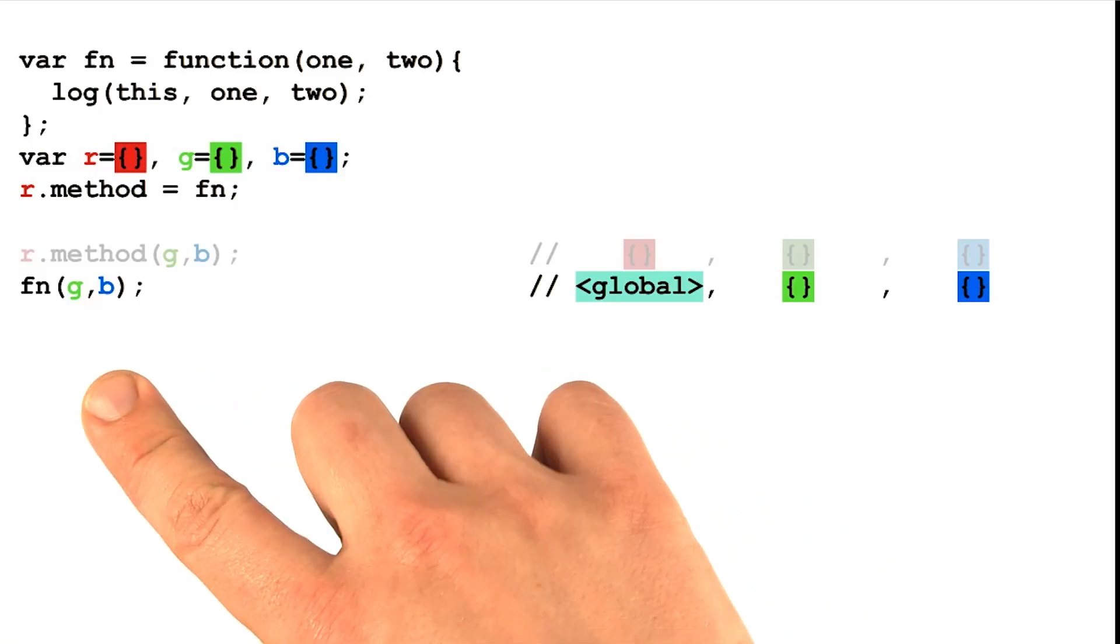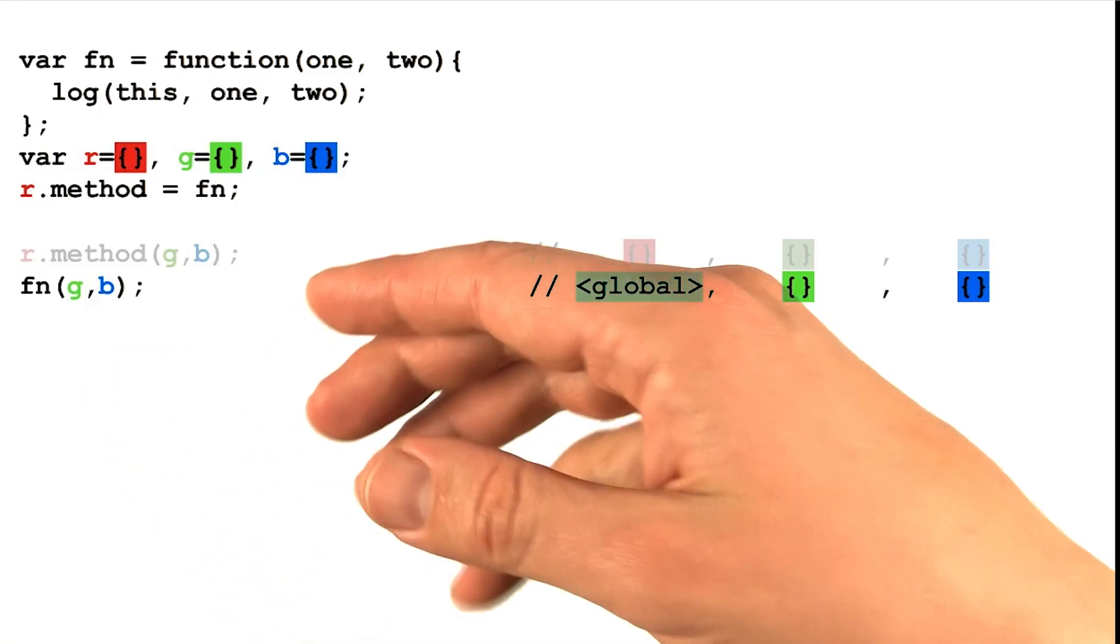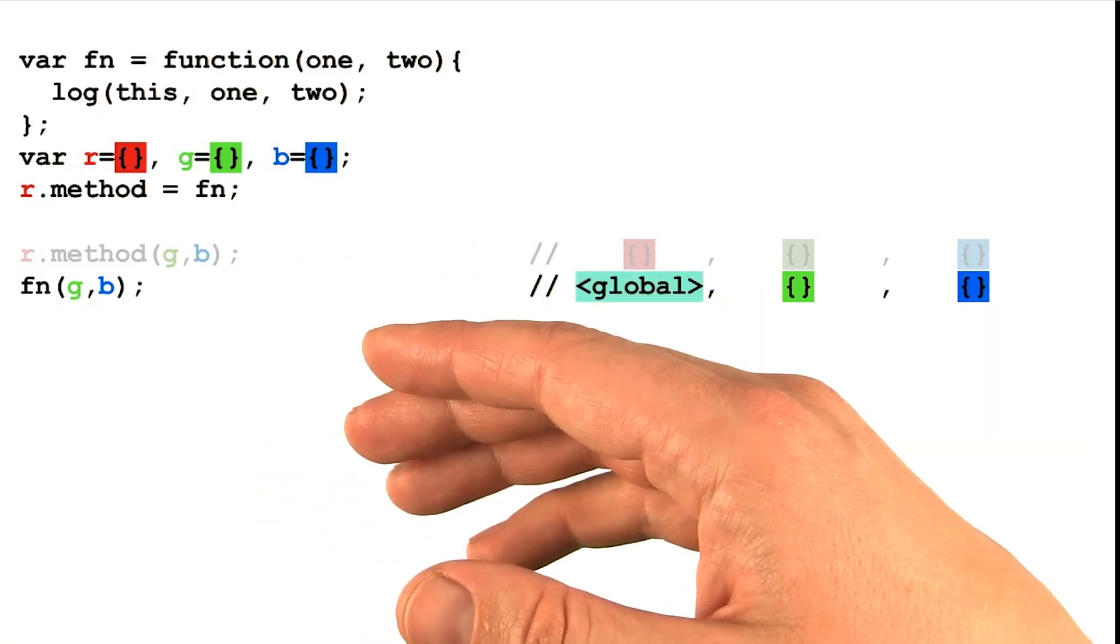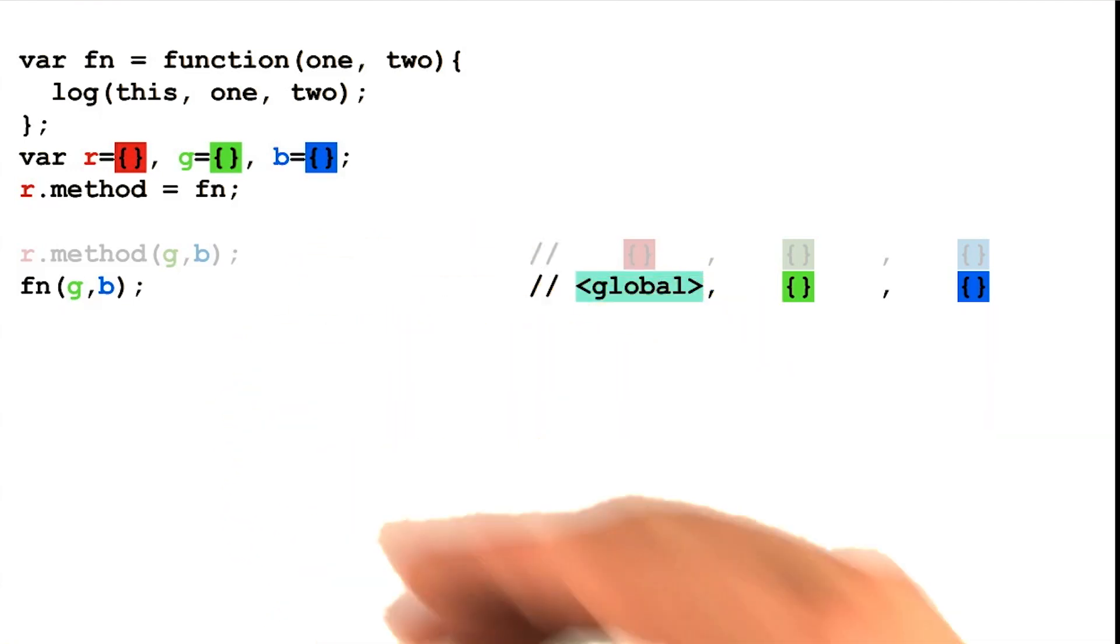But what if you wanted to call a function and it didn't happen to be stored as a property of the object that you want the parameter this to be bound to?